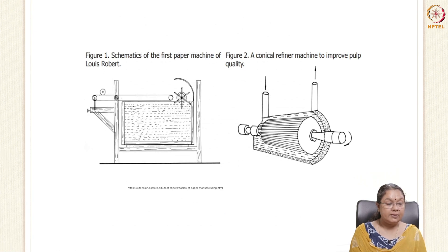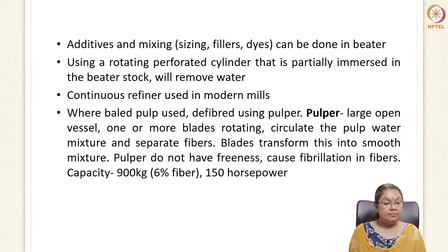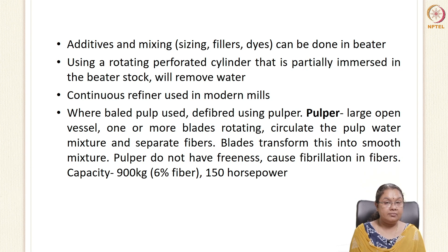A schematic of the first paper machine developed by Louis Robert shows a conical refiner machine which helps in improving quality. During the beating process, additives such as sizing agents, fillers, and dyes can also be added. Perforated cylinders partially immersed in the beating stock help in removing water. In modern mills, continuous refiners can be used, and bale pulp stored as sheets can also be used in the beater.